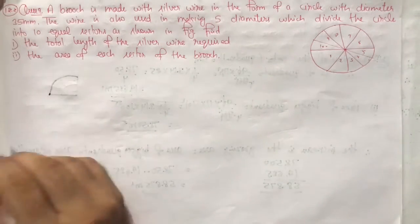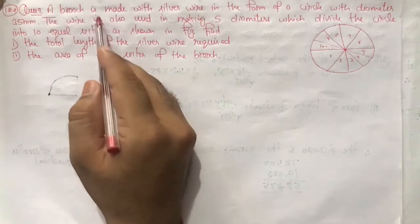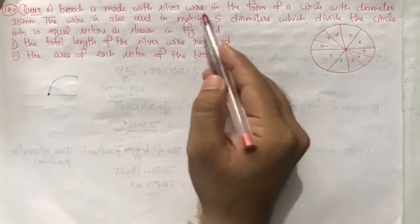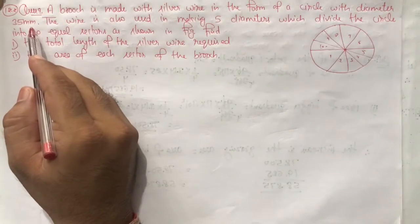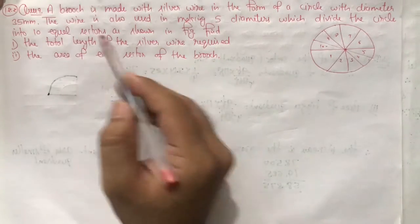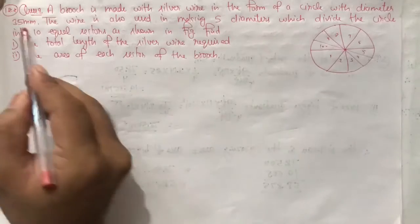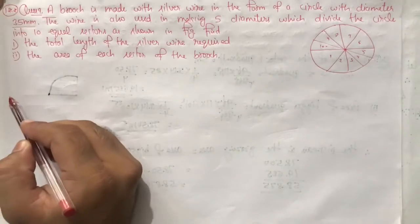Exercise 12.2, question number 9. A brooch is made with silver wire in the form of a circle with diameter 35 mm.